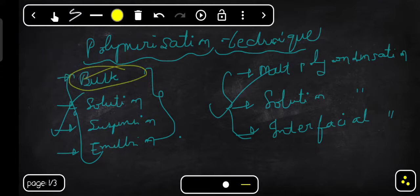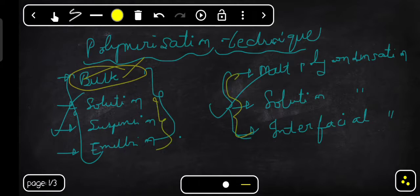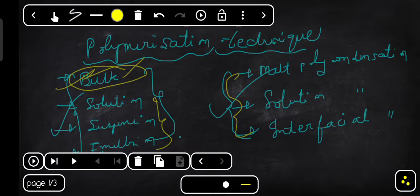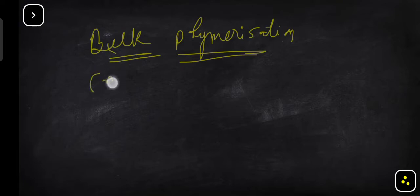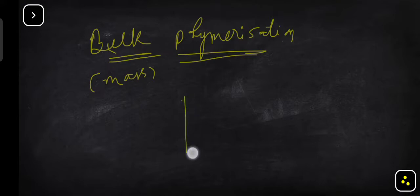In this video we will study the first one: bulk polymerization. We will study in complete detail what bulk polymerization is and how polymers are prepared using this technique. The other six techniques we will study one by one in later videos. Bulk polymerization can also be termed as mass polymerization technique.